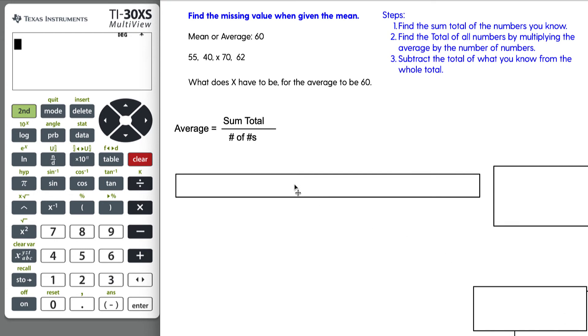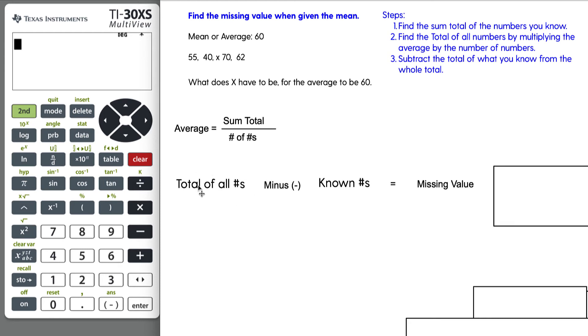It looks like this: we have the total of all the numbers including the one we don't know, minus the known numbers, gives us the missing value. So the total of all the numbers minus the known numbers, that's going to give us our missing value.